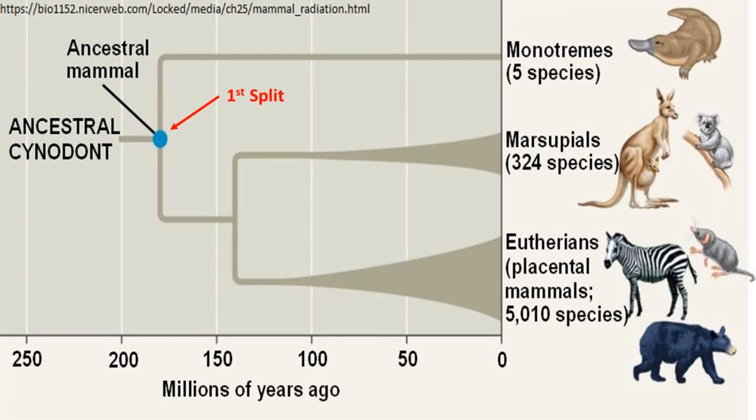The arrival of the Jurassic period saw cynodonts give rise to the first true mammals. They were still quite primitive, but they would later evolve into the modern mammals we see today. Between the mid-Jurassic and the early Cretaceous, two major splits occurred in the mammal lineage. The first split occurred in the mid-Jurassic with the appearance of basal monotreme groups, and the second split occurred in the early Cretaceous with the divergence of basal placental and marsupial forms.